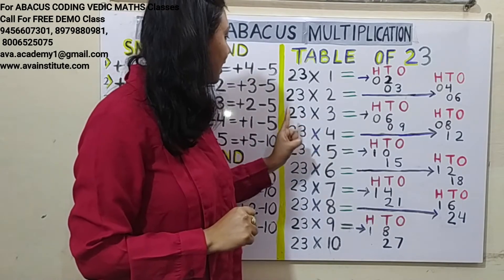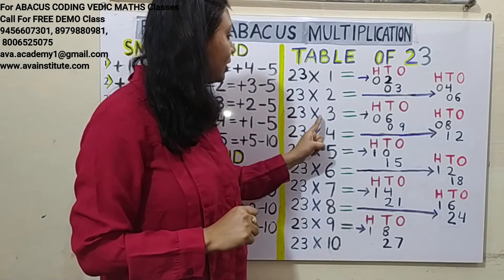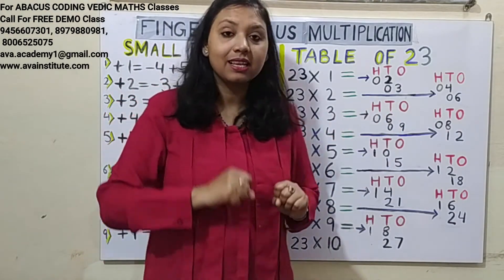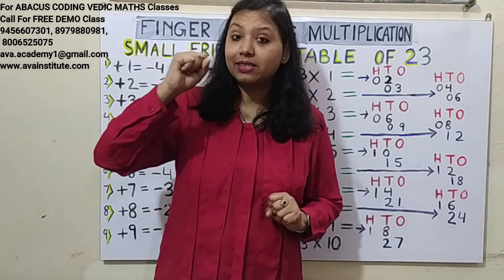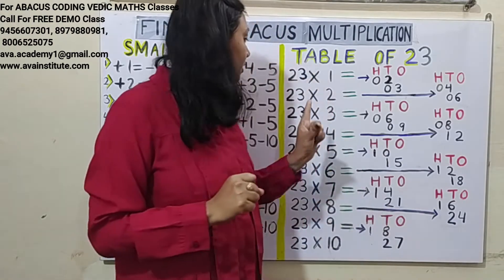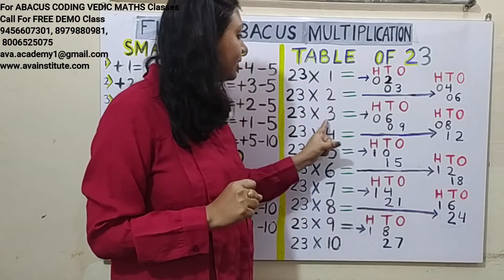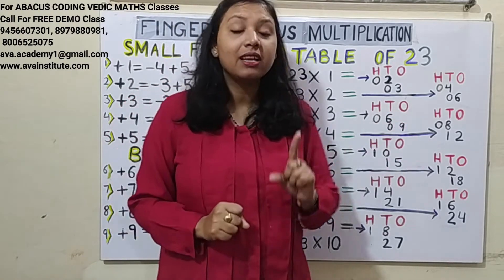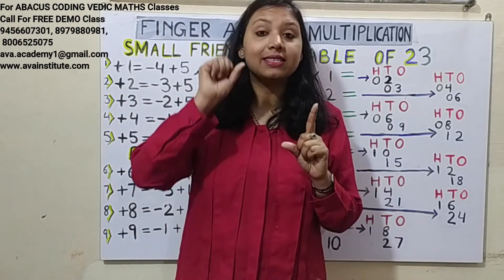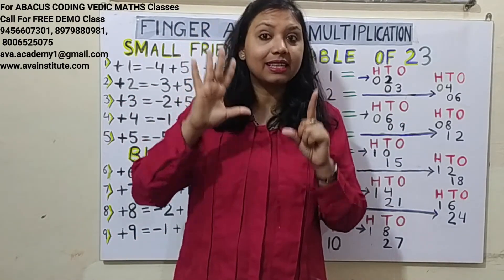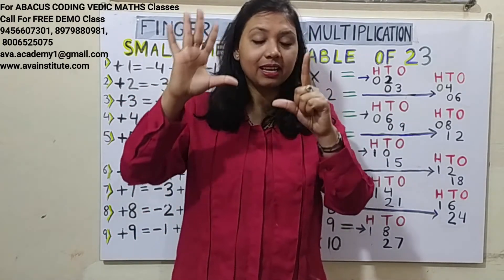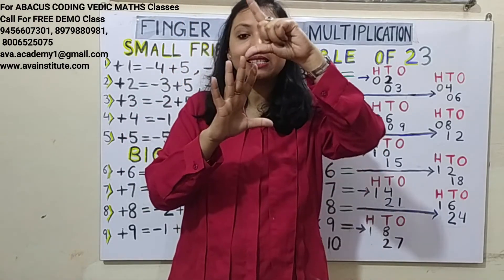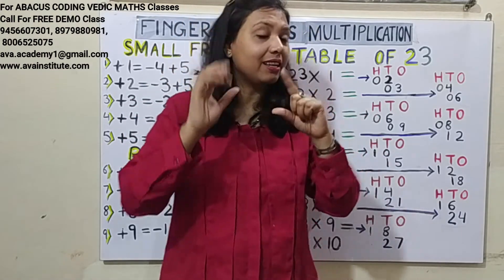23 × 3: 2 × 3 = 6, in 100's: 0, in 10's: 6. 3 × 3 = 9, in 10's: 0, in 1's: 9. Answer is 69.